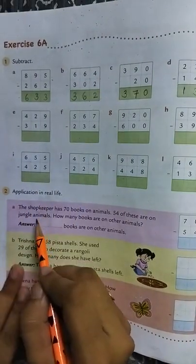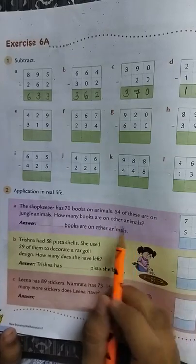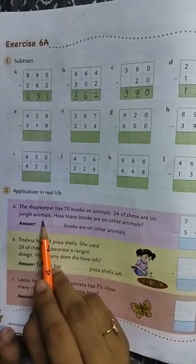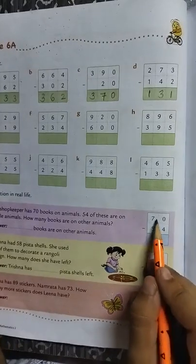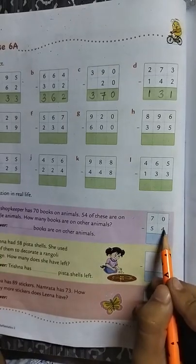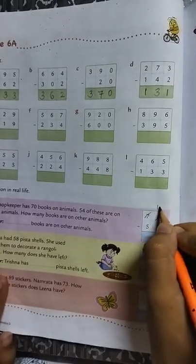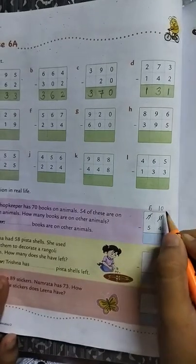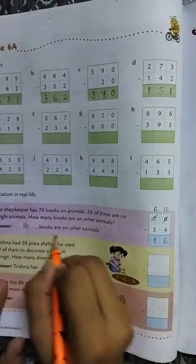Now next question, application in real life. The shopkeeper has 70 books on animals. 54 of these are on jungle animals. How many books are on other animals? So the shopkeeper has 70 books on animals, un mein se 54 jungle animals per hai. So to find this we will subtract 70 minus 54. 0 minus 4, look here we will start from the one's place. 0 minus 4 we can't subtract because it is 0 here. So we will borrow from this number. Ab yaha 10 ho jayega, aur yaha 7 minus 1 is 6. Now 10 minus 4 is 6. 6 minus 5 is 1. So the answer is 16. 16 books are on other animals.